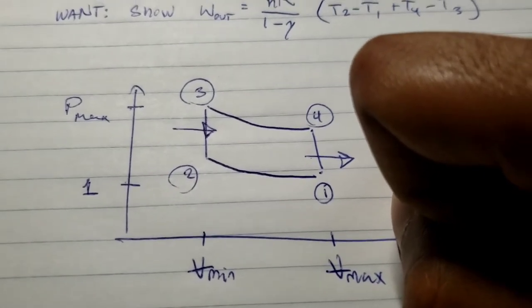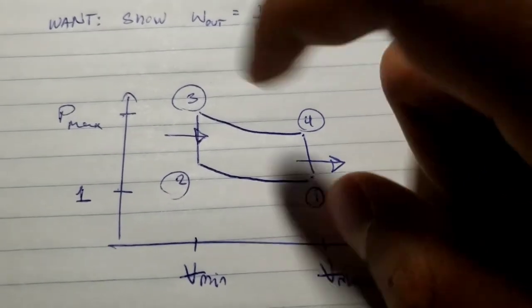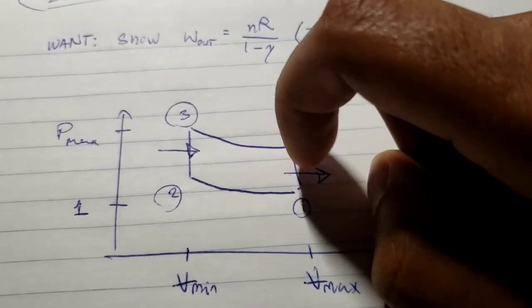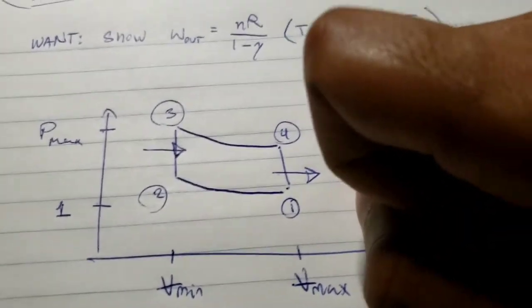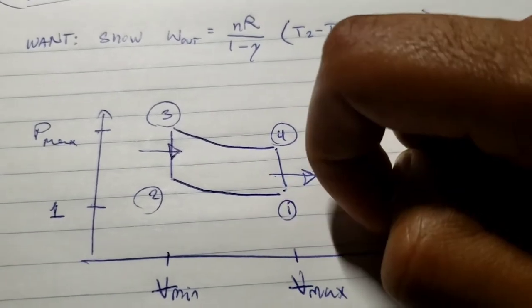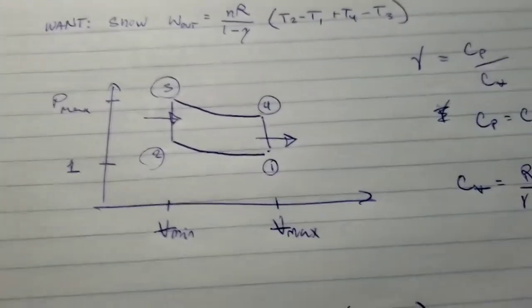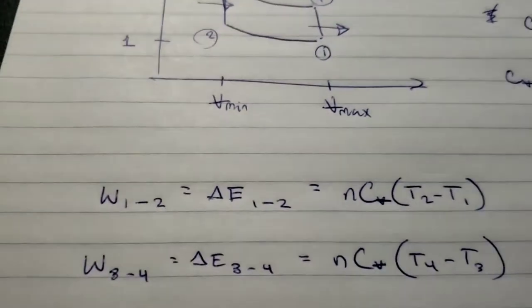We know because it's a vertical line, so there's no area under the curve. Then we go from 3 to 4, which is kind of the reverse of 1 to 2. And then 4 to 1, which is the reverse of 2 to 3, again another isochord process, meaning no work is done.